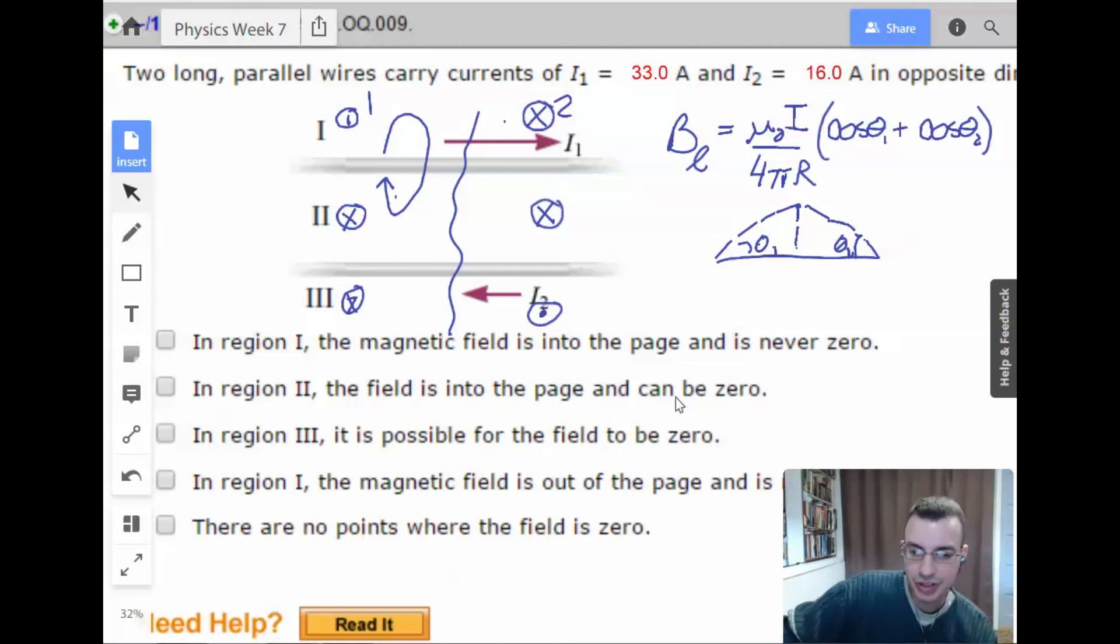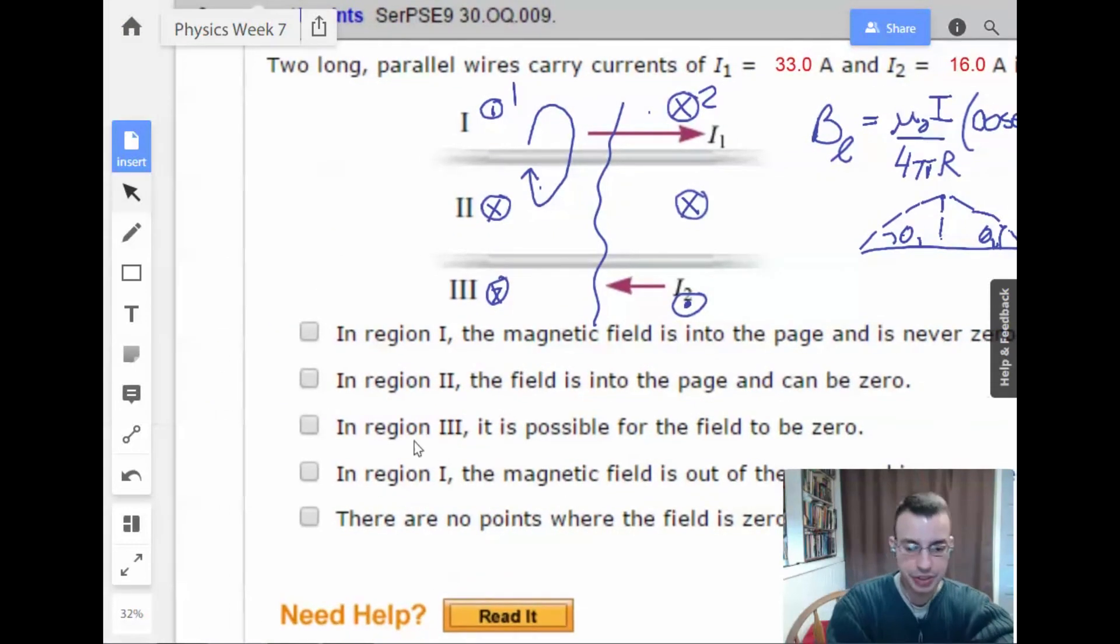In region three, it is possible for the field to be zero. Region three is, okay, so yes. That's going to be true. So we have the two factors that determine field strength is going to be the current and the distance. So, wire two is going to be closer to region three, but I1 has a stronger current. So depending on where you are in region three, either wire one or wire two can dominate. And when none of them dominate, i.e., they're both specifically have the same influence, then the field will be zero. And you see how these are opposite? This is into the page. This is out of the page. Therefore, when you add them together, you have a possibility of them canceling. So yes, this guy can be true.